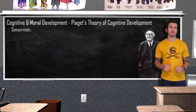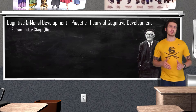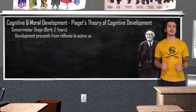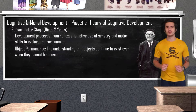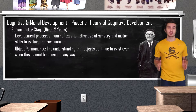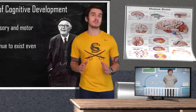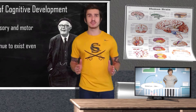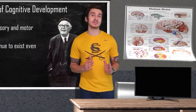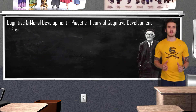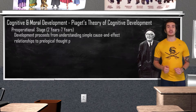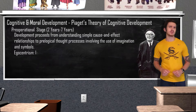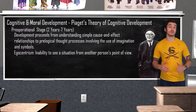Piaget's theory starts with the sensorimotor stage, occurring from birth to around age two. During this stage the child gains an understanding of object permanence — the idea that an object still exists even when there is no longer any sensory input of that object. In this stage the baby also starts to understand basic cause and effect relationships. As cognition develops we move to the pre-operational stage, lasting from roughly age two to seven, where symbolic thought and language development occur, though thought tends to be egocentric.